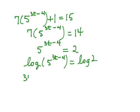Then using the power property, I'm going to rewrite this as 3t minus 4 times the log of 5 equals the log of 2.